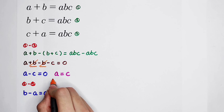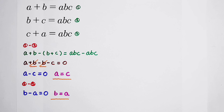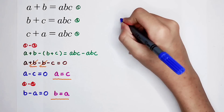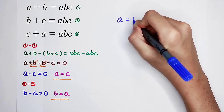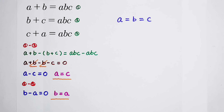Now A is equal to C, and B is equal to A, and A is equal to C, and A is equal to B. Then we can conclude that A, B, and C all have the same value: A is equal to B is equal to C.